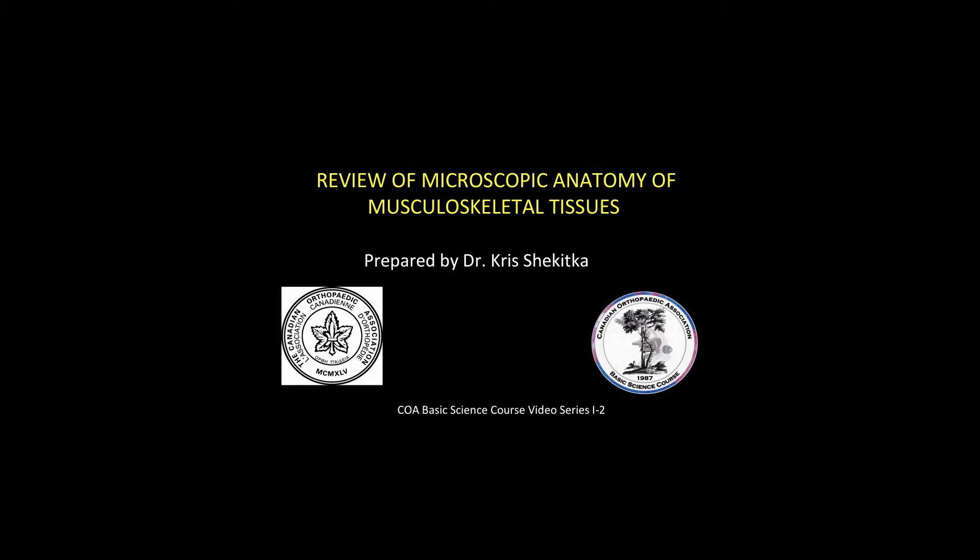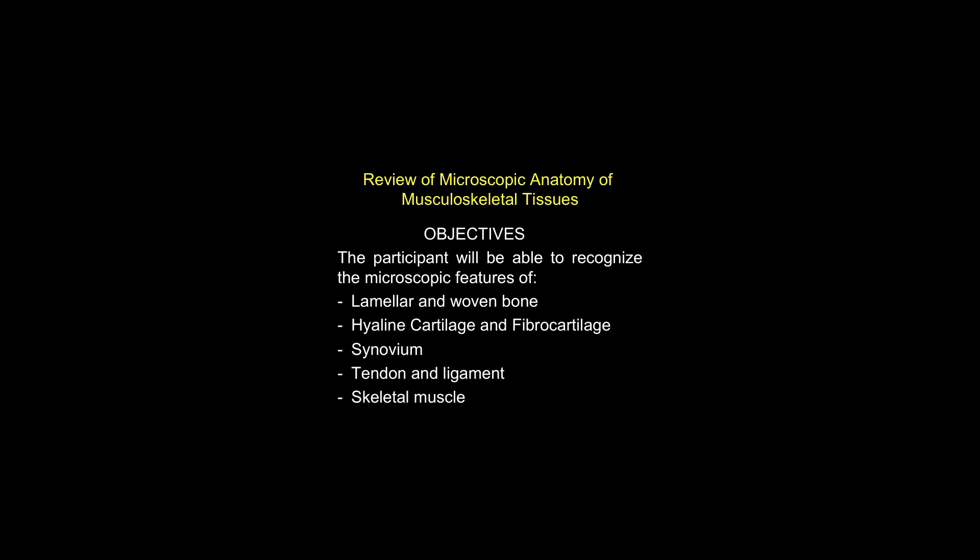The purpose of this video is to provide a brief overview of the normal microscopic anatomy of the human musculoskeletal system. The histologic features of the tissues that make up bones and joints will be reviewed along with their supportive connective tissue elements such as tendons, ligaments, and skeletal muscle.